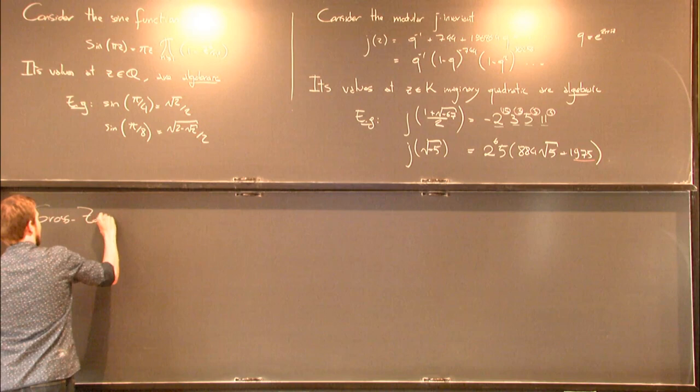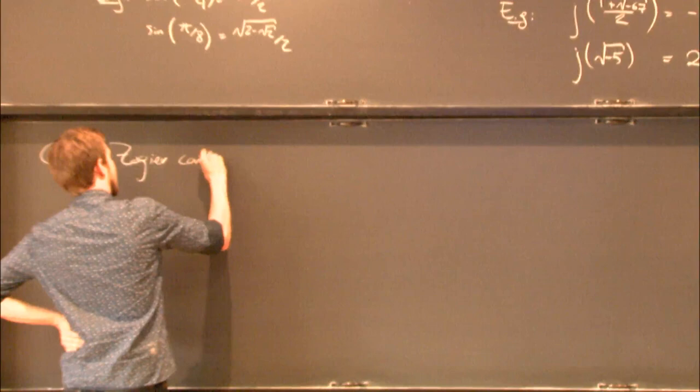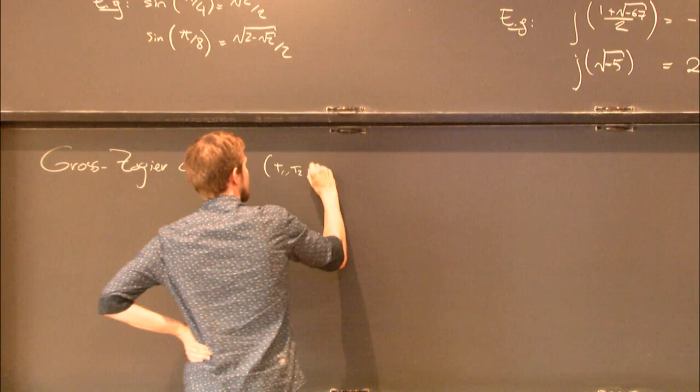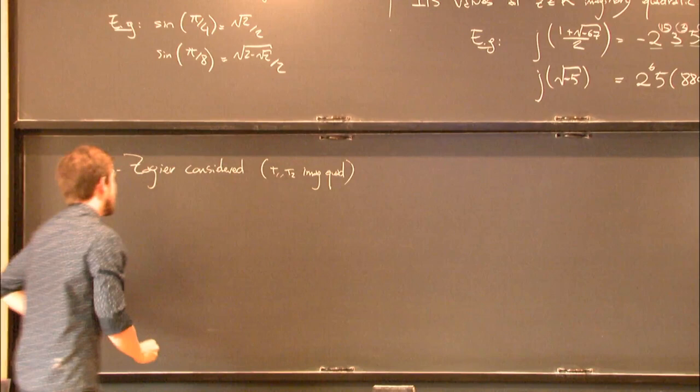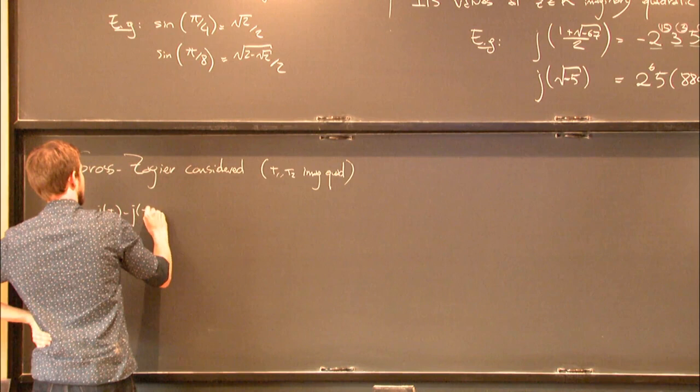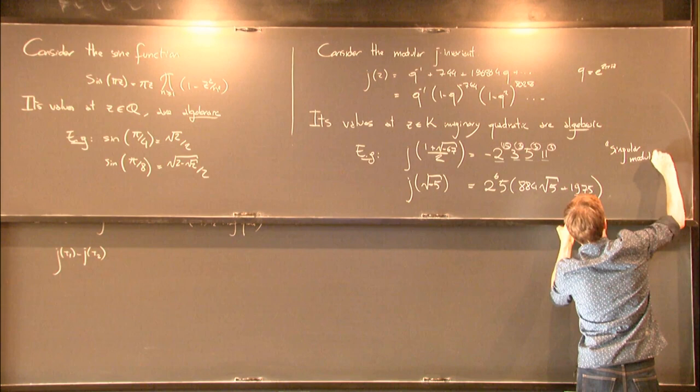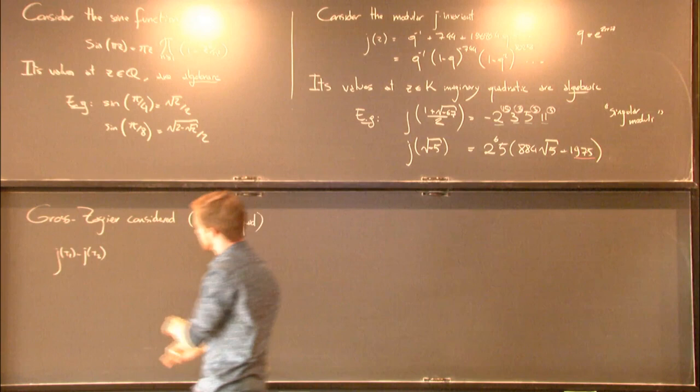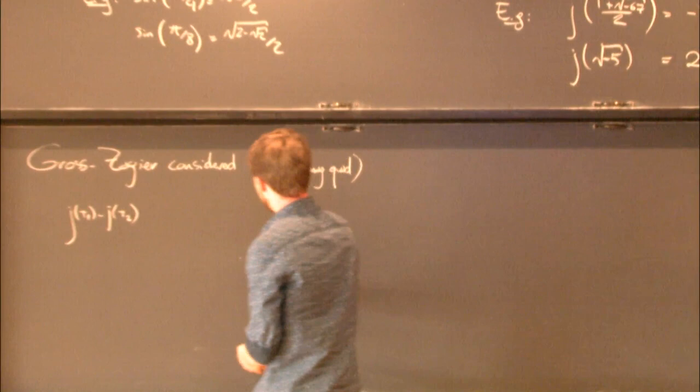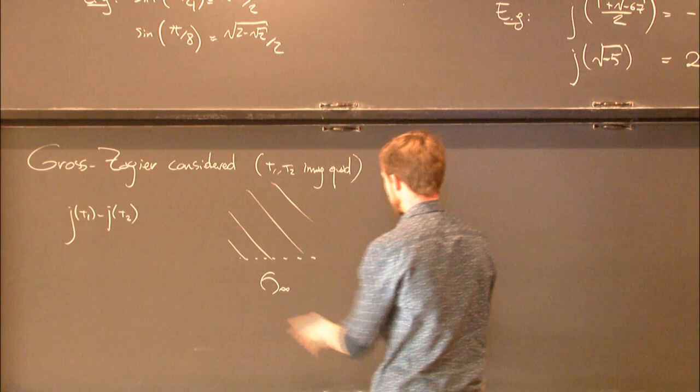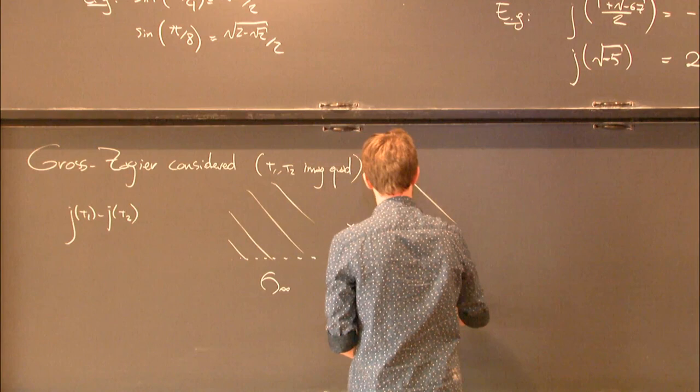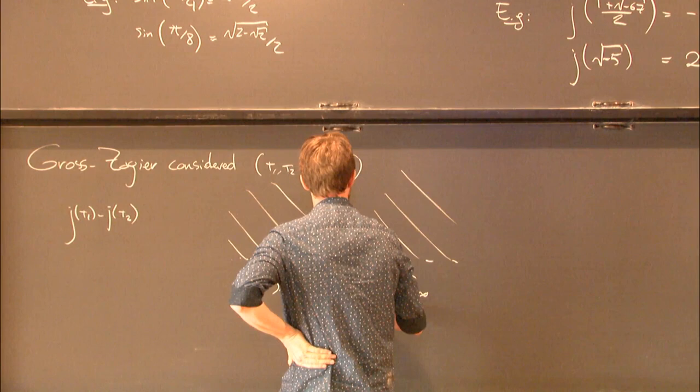Gross and Zagier did something that looks a little bit strange at first. They took a τ₁ and a τ₂ which were imaginary quadratic, and they considered the quantity j(τ₁) - j(τ₂). By the way, these special values are tremendously interesting things, and they're usually called singular moduli—that's this word that appears in my title. The geometric picture to have in mind is that the j function has as its domain the upper half plane h_∞, and this difference of two j functions is a function on the product h_∞ with itself, that's invariant under the action of the group SL₂(Z) × SL₂(Z).